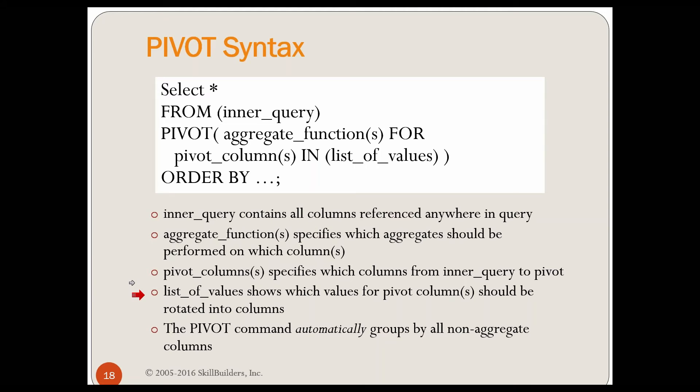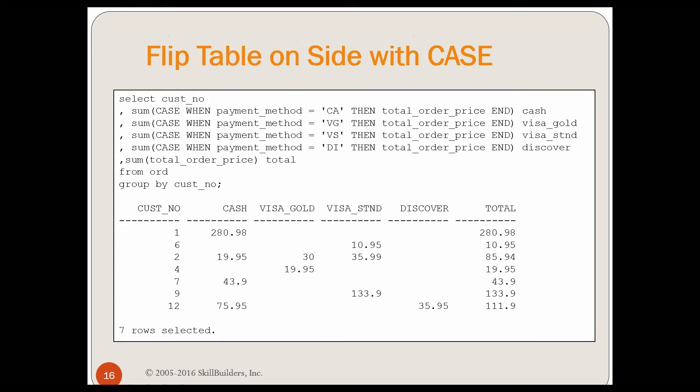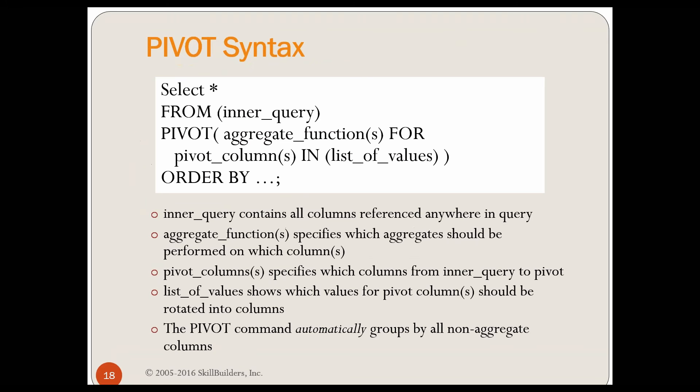And now, which values are you going to pivot? That's your in clause, your list of values. These are the values you want pivoted. You don't necessarily pivot all values. You're only going to pivot, potentially, some values. Because you may not want to see all of these values. That may not be important to you. You may only want to pivot some of the values. In the prior example, we only pivoted cash, Visa Gold, Visa Standard, and Discover. Maybe there were others we didn't want to pivot. Maybe you want to pivot things like how many days late the balance is. You can pivot whichever ones you want, and that is going to be in your list of values clause here.